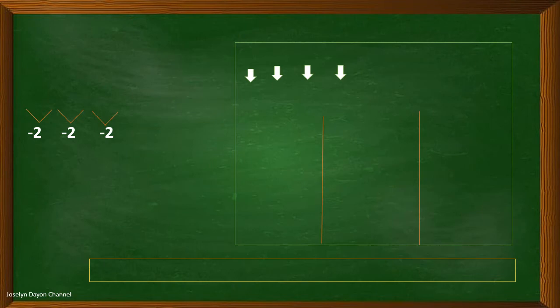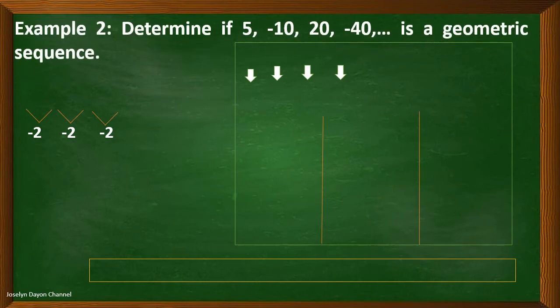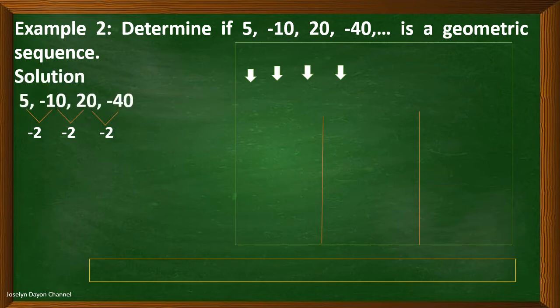Now, let's consider example number 2. Determine if 5, negative 10, 20, negative 40 is a geometric sequence. To check whether the sequence is geometric, we have to check for the common ratio. Negative 10 divided by 5, the answer is negative 2. 20 divided by negative 10, the answer is also negative 2. Negative 40 divided by 20, the answer is also negative 2. The quotient between two consecutive terms is constant, so the common ratio is negative 2.